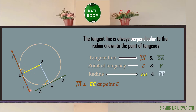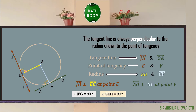Therefore, we can conclude that line JH is perpendicular to segment EG at point E. Also, line AO is perpendicular to segment GV at point V, meaning that we formed 90-degree angles. Those are: angle JEG equals 90 degrees, angle GEH is 90 degrees, angle GVA is 90 degrees, and angle GVO equals 90 degrees.